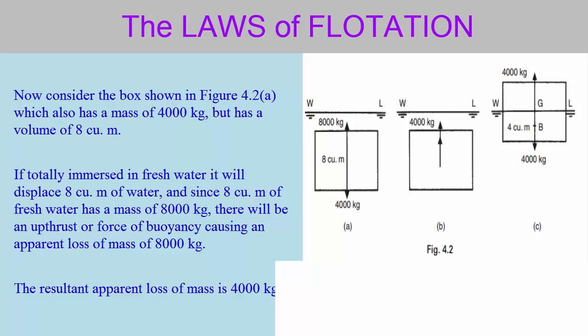Since 8 cubic meters of fresh water has a mass of 8000 kilograms, there will be an upthrust or force of buoyancy causing an apparent loss of mass of 8000 kilograms. The resultant apparent loss of mass is 4000 kilograms.